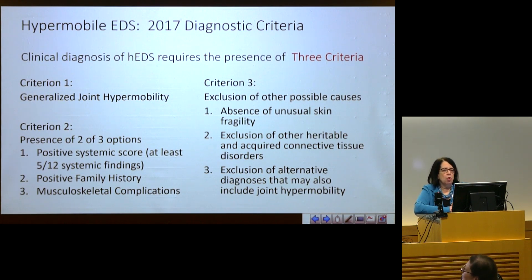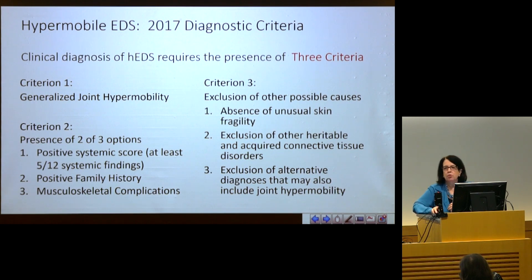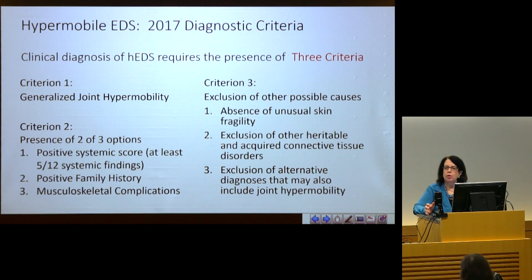For the hypermobile type of Ehlers-Danlos syndrome, according to the 2017 diagnostic criteria, there are three criteria that people need to meet. Criteria one is generalized joint hypermobility. Criteria two includes two out of three options: a positive systemic score with at least five out of 12 systemic findings, a positive family history, or musculoskeletal complications such as recurrent joint dislocations or chronic pain in more than two limbs for over three months.